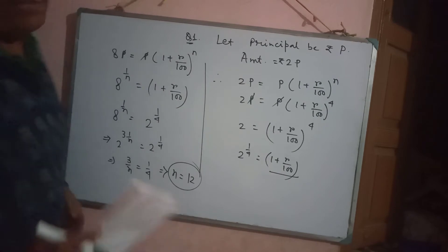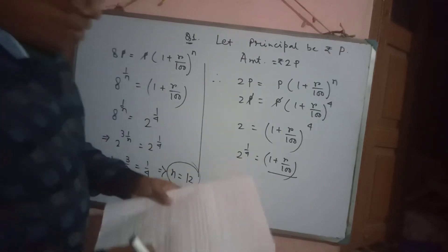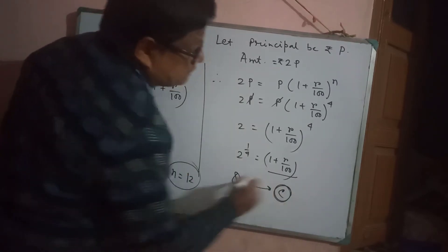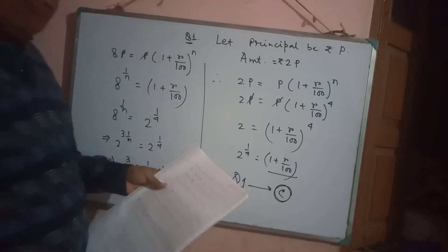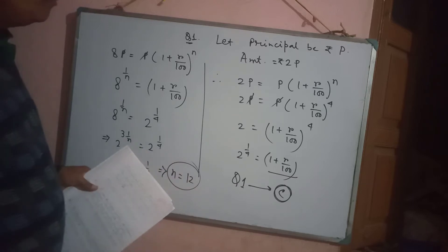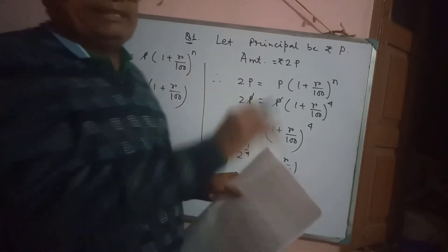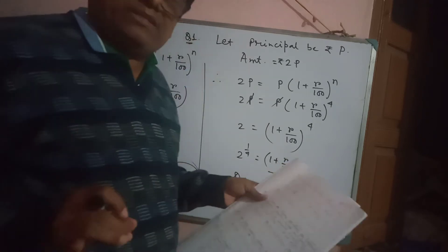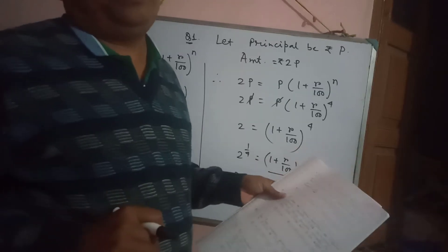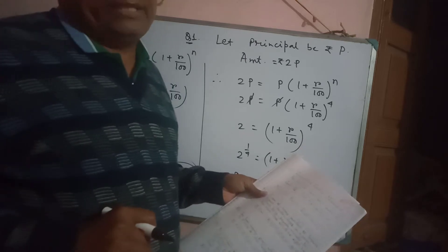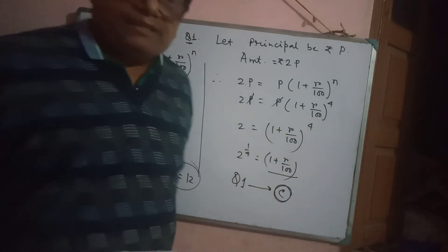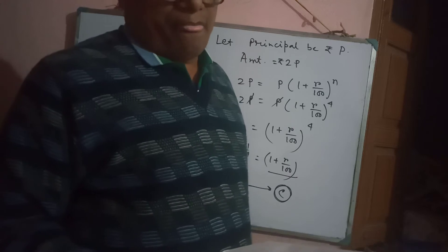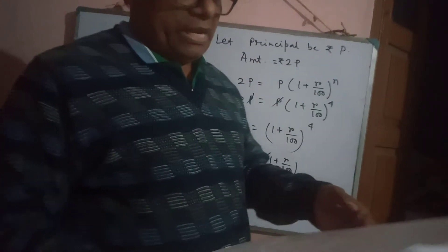So after 12 years it will be eight times. Question number one, option C is correct — option C gives 12 years. In the book sum the answer would be 20 years, but the data is changed here. Those who wrote 20 years, 16 years, or 10 years — all wrong answers. The only correct option is 12 years.